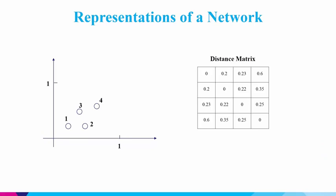The values at the intersection of a row and column — for example, the value of 0.2 — means the distance from the row circle to the column circle, which is circle 1 to circle 2, a distance of 0.2. The value on the second row and fourth column means the distance from the second circle to the fourth circle, which is 0.35. Along the diagonal is the distance from the circle to itself, which is 0. The values are symmetric along the diagonal because the distance from circle 3 to circle 4 is equivalent to the distance from circle 4 to circle 3.